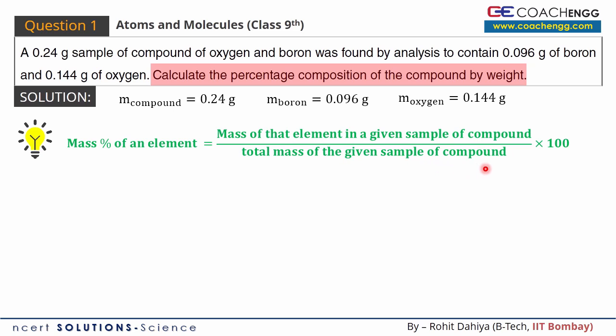Mass percent of an element equals the mass of that element in a given sample divided by total mass of the given sample, multiplied by 100. So we take the mass of the required element, divide it by the total compound mass, and multiply by 100.